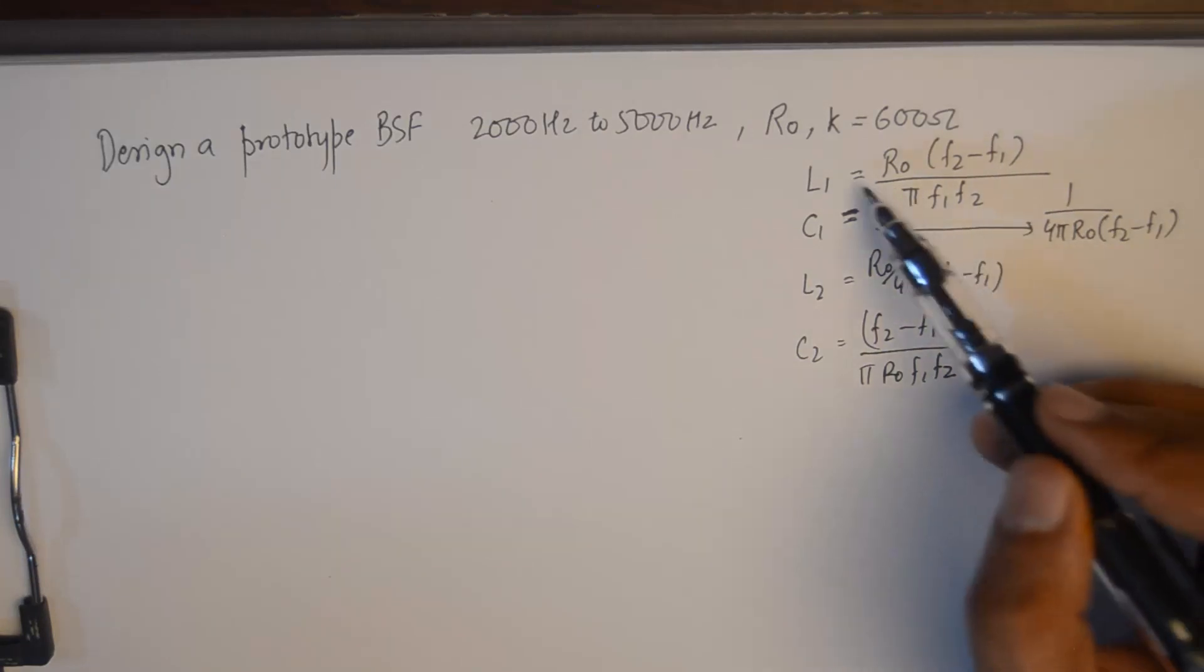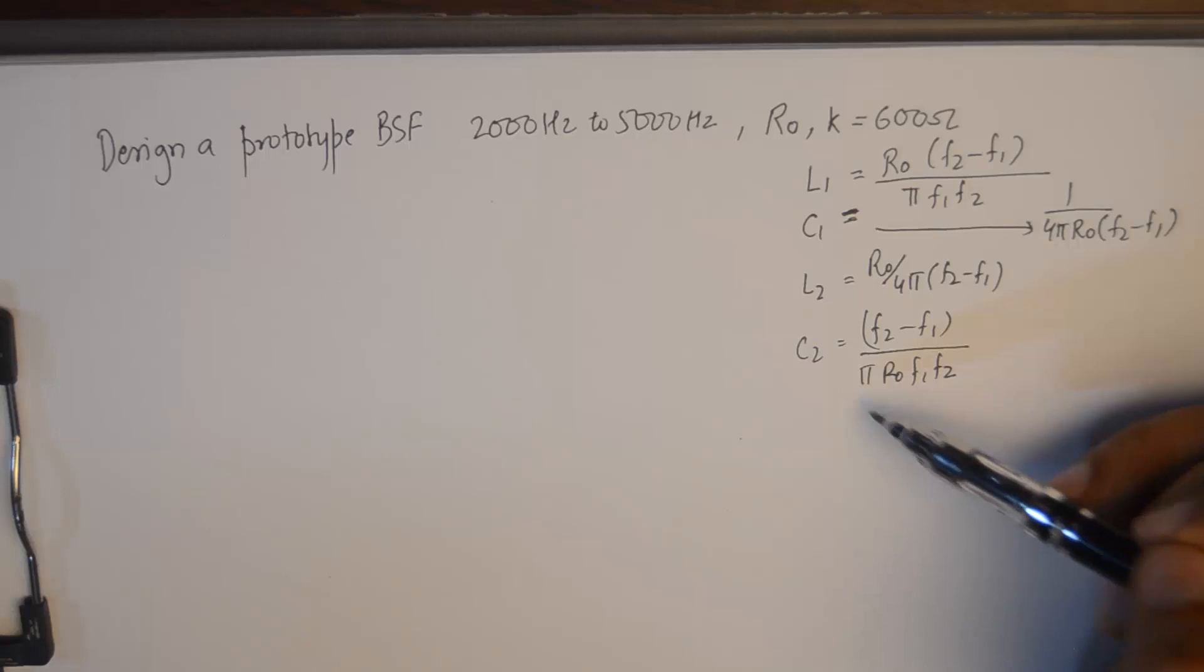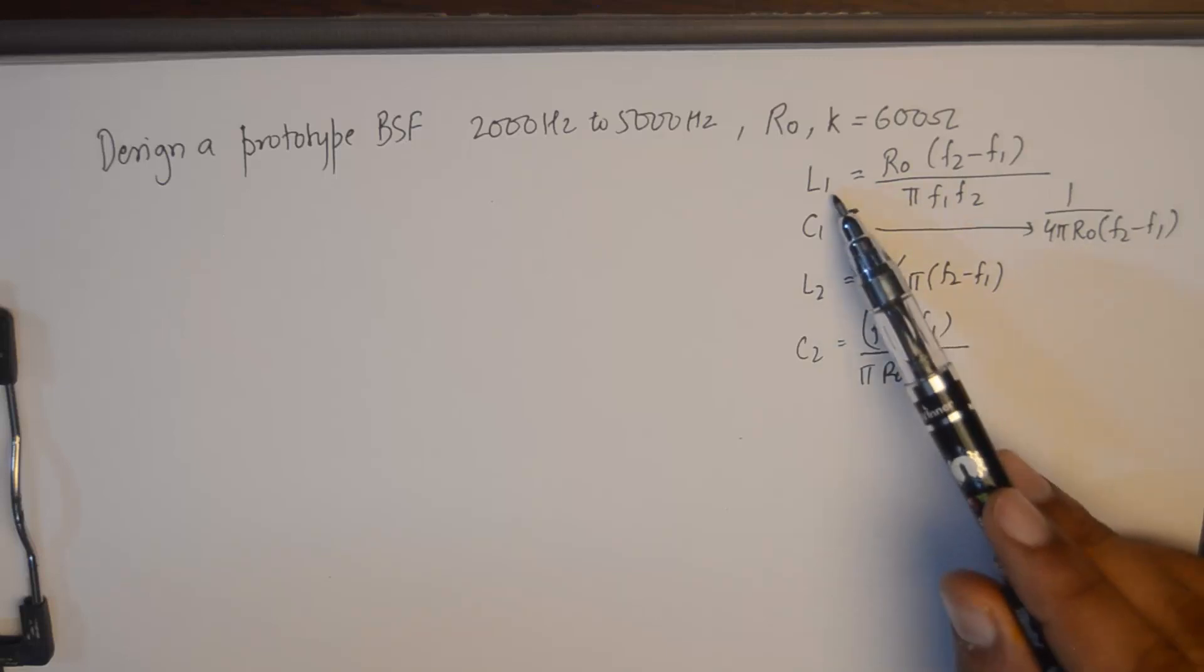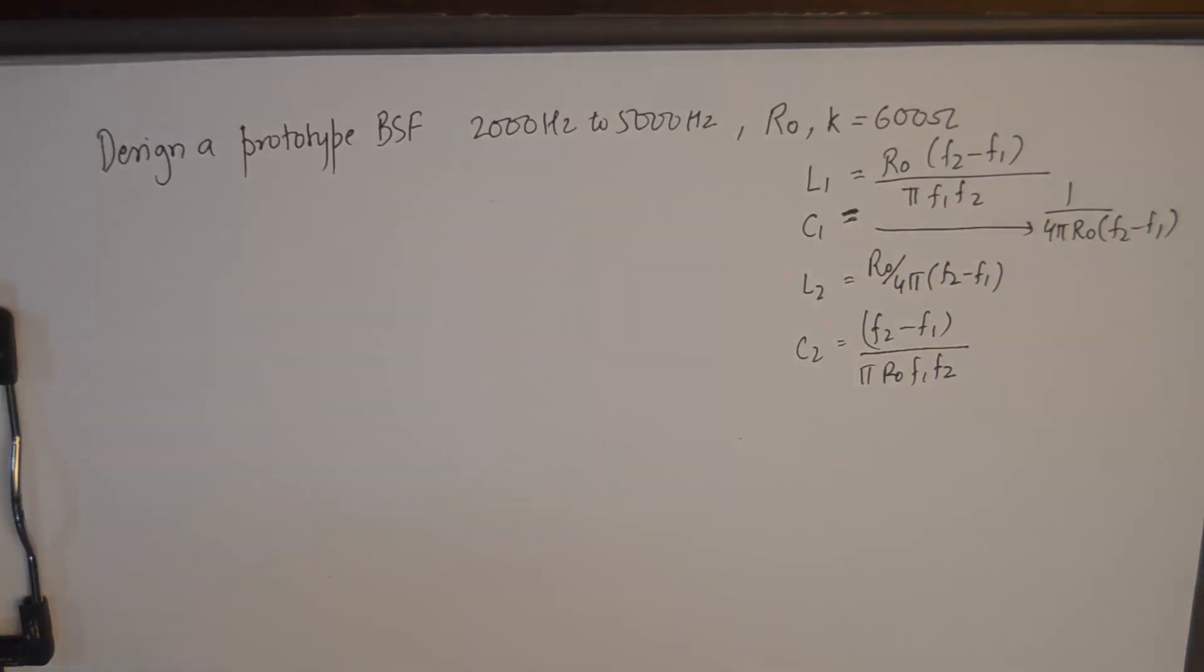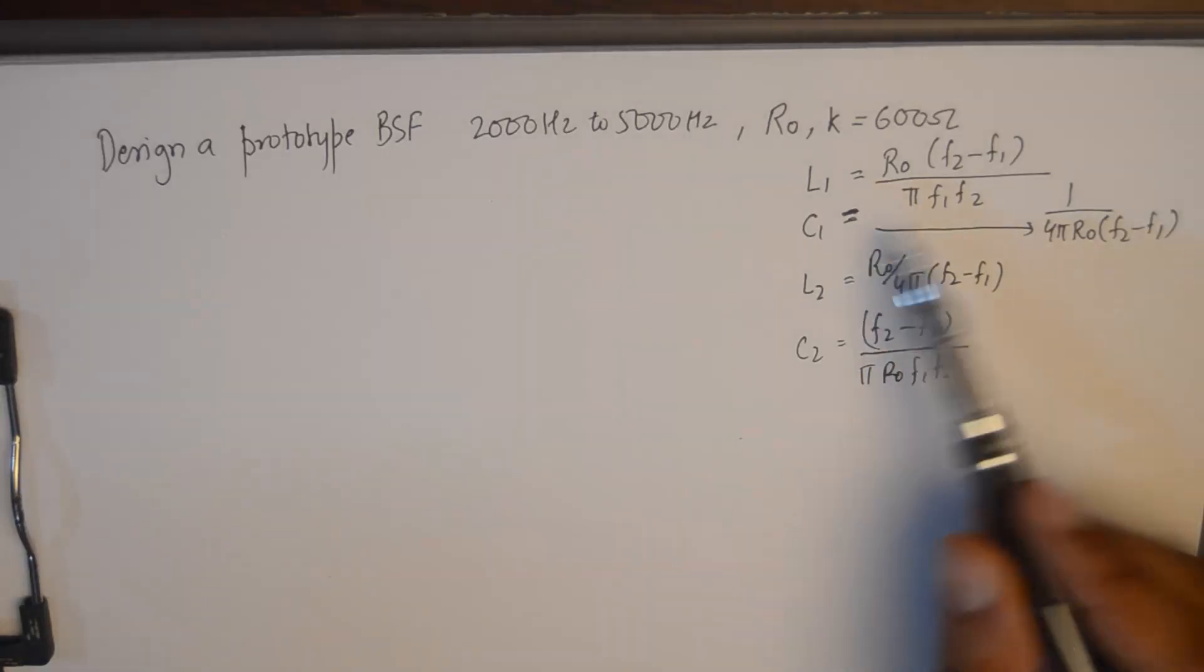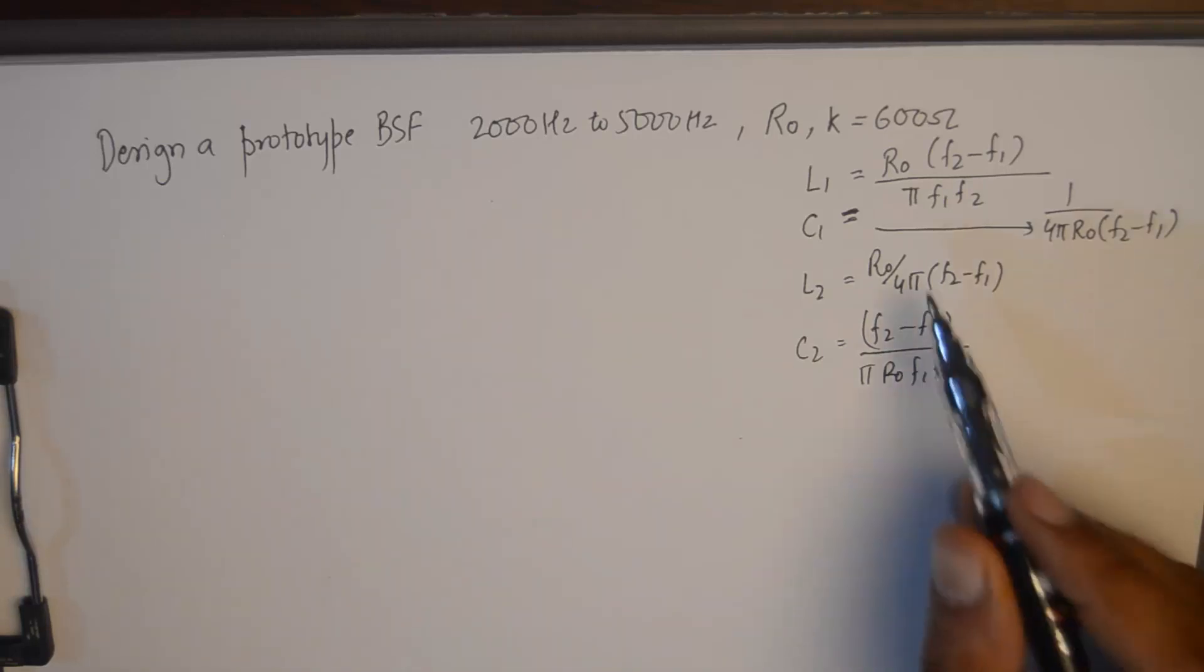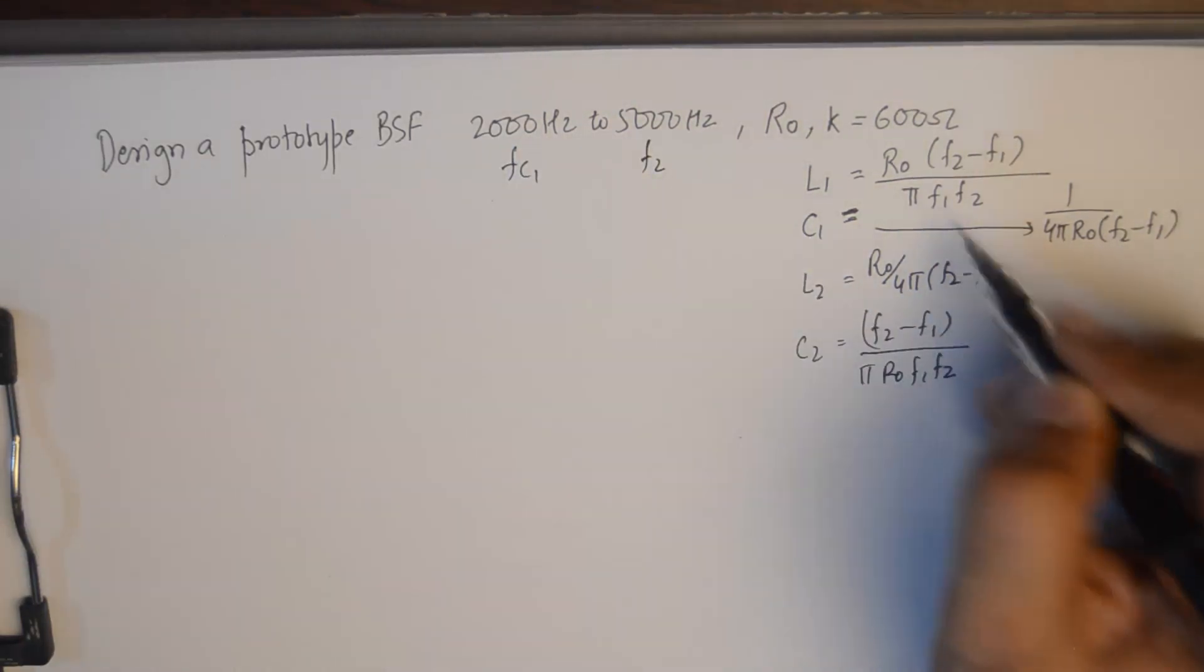As you can see, you've got a set of formulas for L1, L2, C1, C2 for band stop filter. And in the previous video, we studied a set of formulas for L1, L2, C1, C2 for band pass filter. So from solving numericals, we'll need to remember all these formulas for both the filters by heart. You'll need to find a mechanism of remembering them.